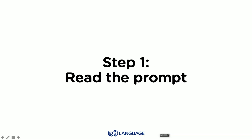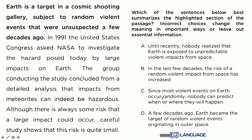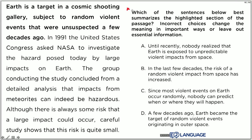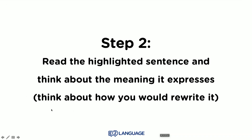This is a bit of a tricky one. So step one: read the prompt. Let's just read it again so you're really clear — 'which of the sentences below best summarizes the highlighted section of the passage?' Step two: read the highlighted sentence in the passage and think about the meaning it expresses. Think about how you would rewrite it, for example.